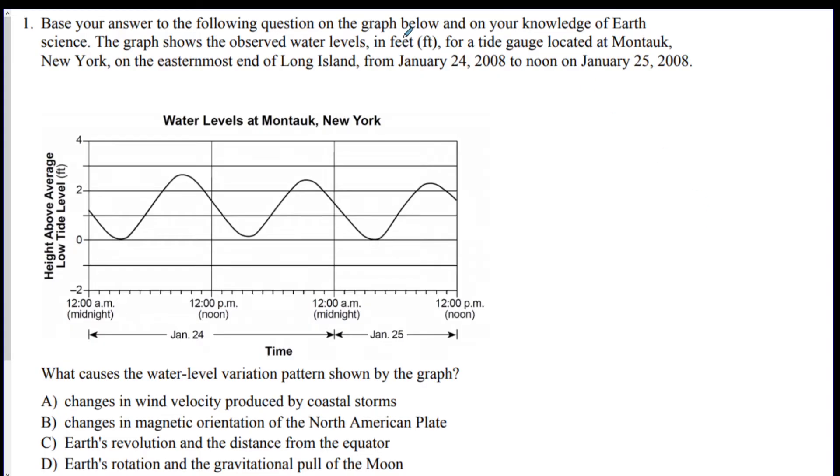Number one, base your answer to the following question on the graph below and on your knowledge of Earth science. This graph shows the water levels in feet for a tide gauge at Montauk, on Long Island, from that date to that date. What causes the water level variation pattern shown by the graph? What causes the tides? So what's happening here is the tides are changing over the course of a day and a half.